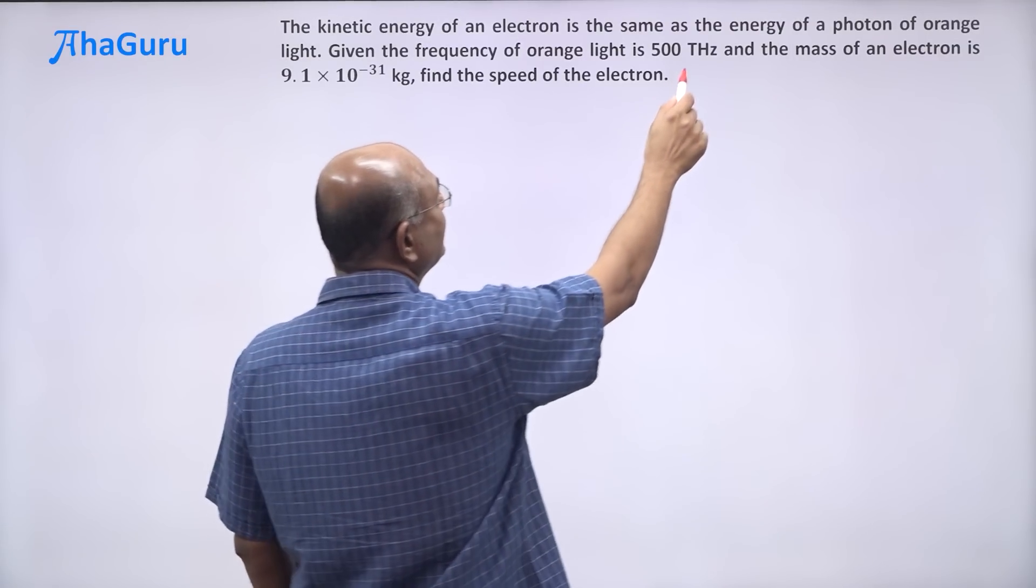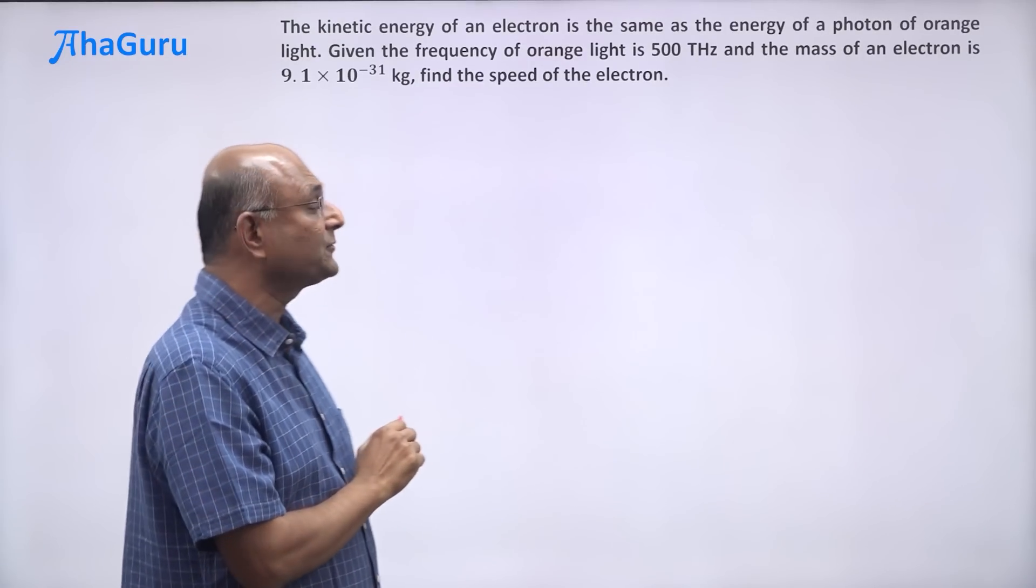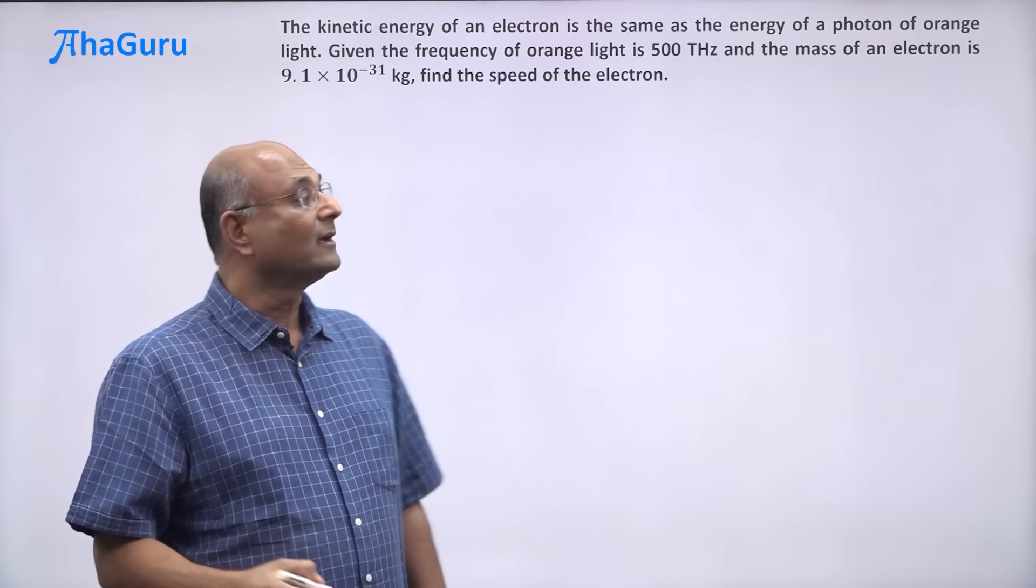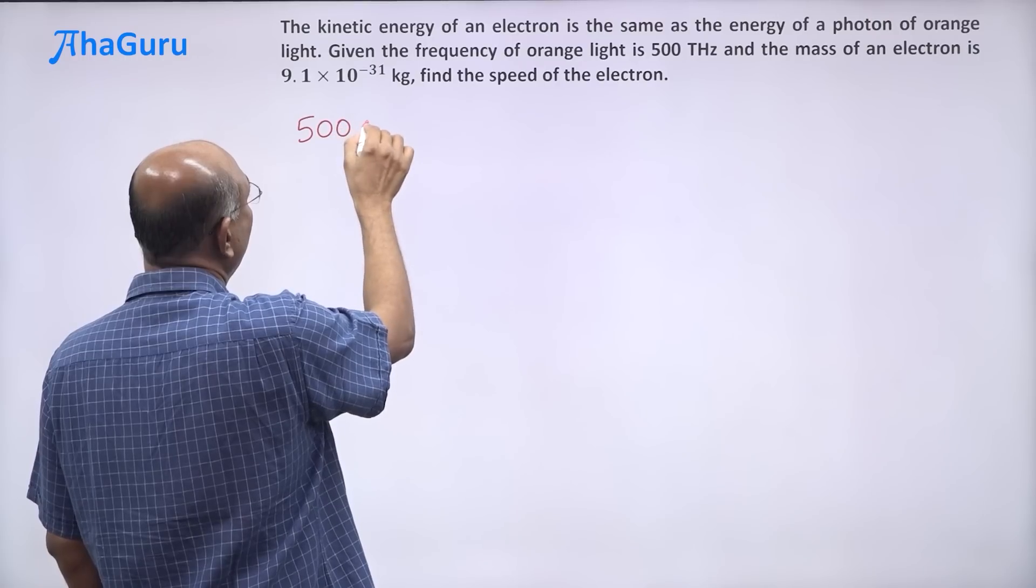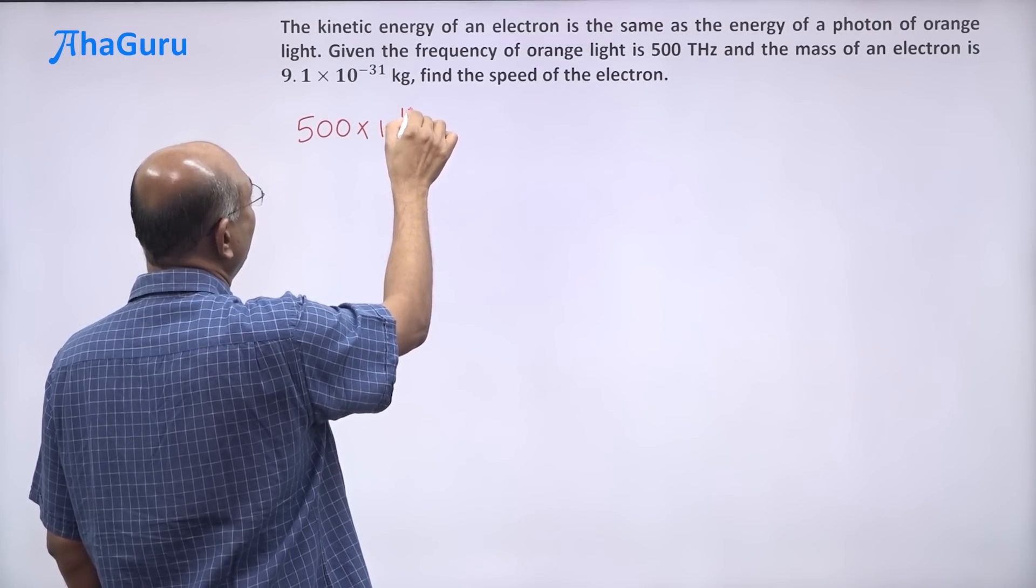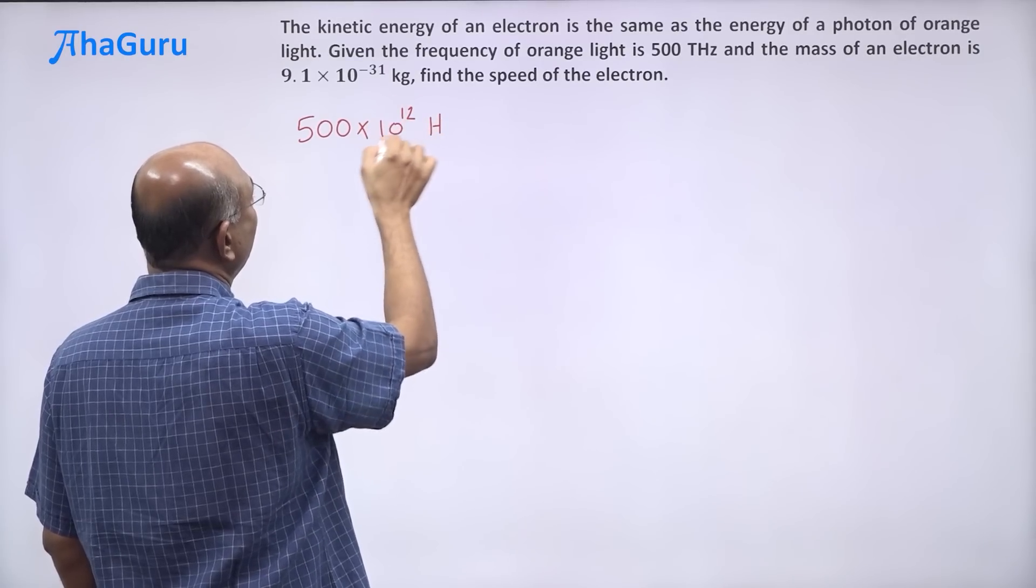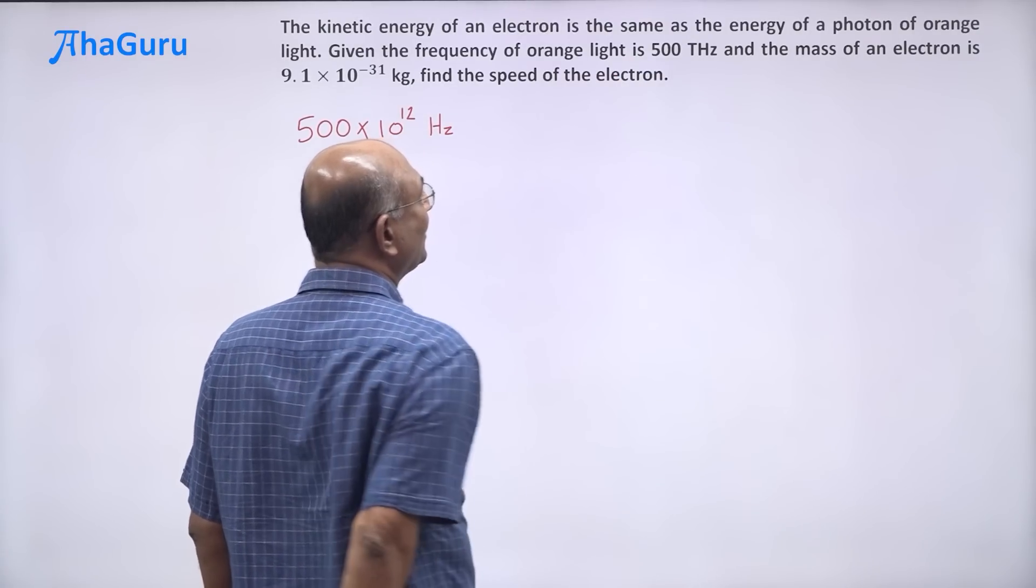What is that 500 THz? Well, that is hertz. This is terahertz. T basically stands for tera. Tera is a trillion. So 500 THz is 500 trillion, 10 to the power of 12 is a trillion. So 500 trillion hertz, that's what this stands for.